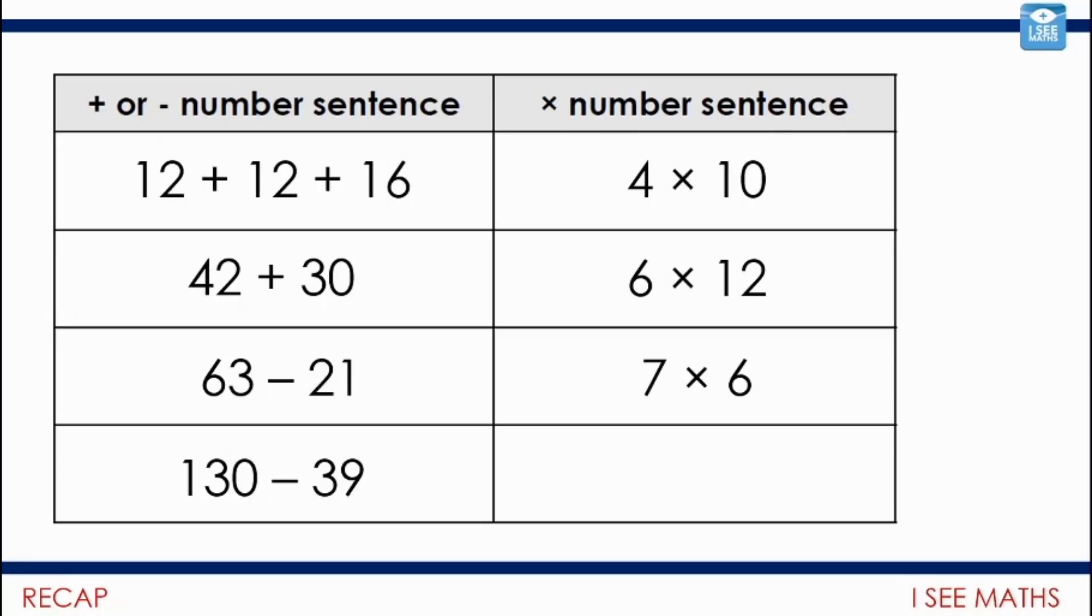And then the last one. 130 subtract 39. Well, 130 is 10 lots of 13. 39 is 3 lots of 13. So, in total, how many lots of 13? 7 lots of 13. 13 multiplied by 7.